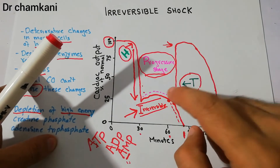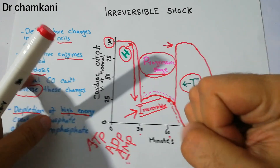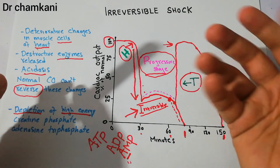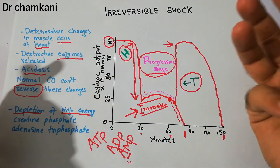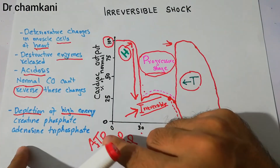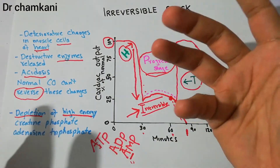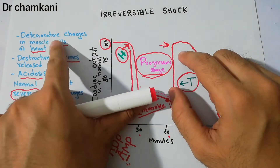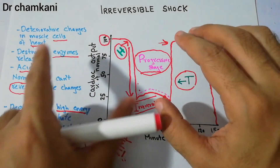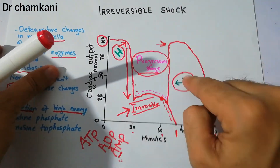After reaching the irreversible stage, cells cannot perform their normal functions. The heart muscles cannot pump properly, the liver cannot detoxify toxins, the lungs cannot function properly and edema can occur, and the intestinal muscles cannot function properly. When there is no energy, cells cannot function, and on top of that there is release of destructive enzymes, deterioration of cells, and acidosis — all these factors lead to the stage in which shock becomes irreversible even if external help is provided.